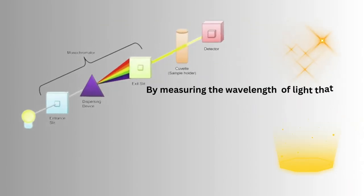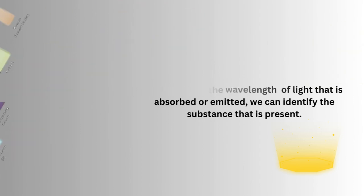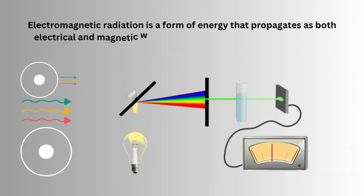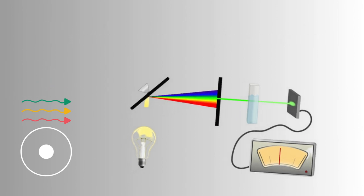By measuring the wavelength of light that is absorbed or emitted, we can identify the substance that is present. Electromagnetic radiation is a form of energy that propagates as both electrical and magnetic waves traveling in packets of energy called photons.